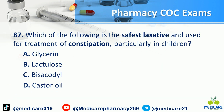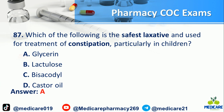Number 87: Which of the following is the safest laxative used for treatment of constipation, particularly in children? a. Glycerin. b. Lactulose. c. Bisacodyl. d. Castor oil. The answer is A.